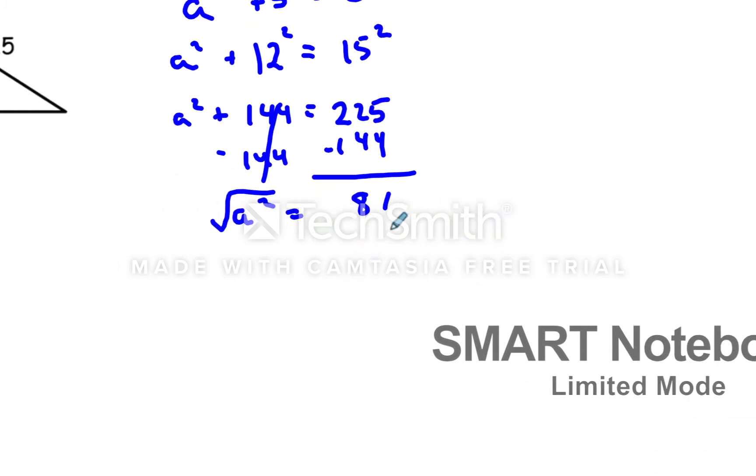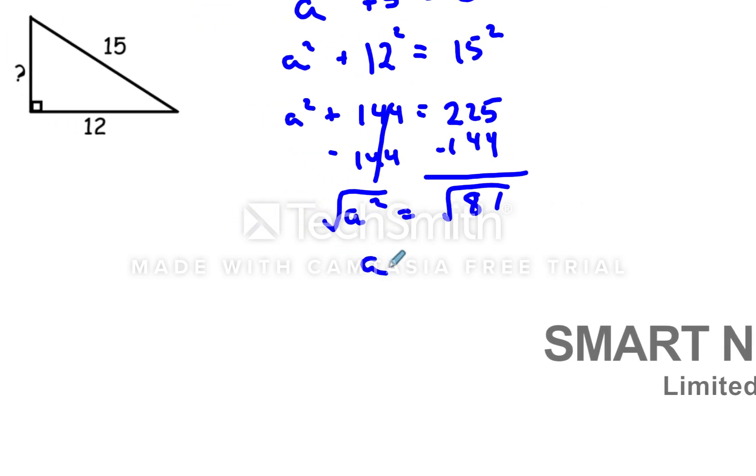Take the square root of both sides to get a by itself. And a equals 9.